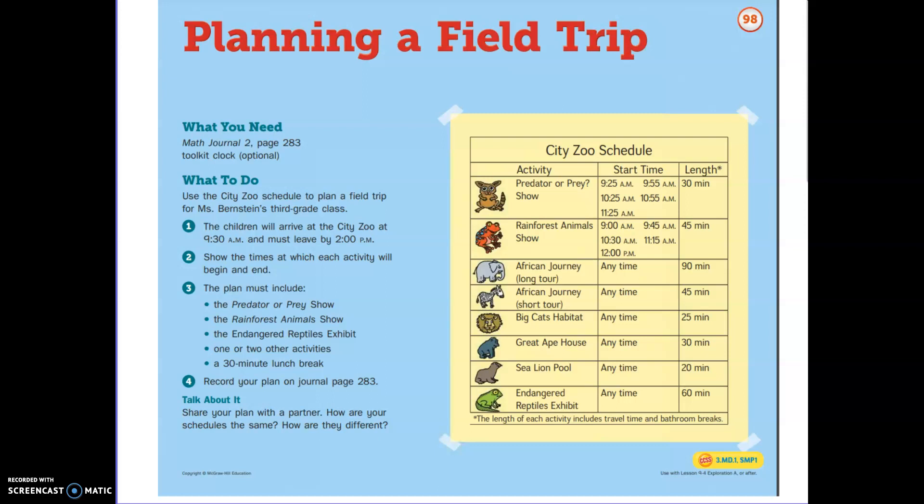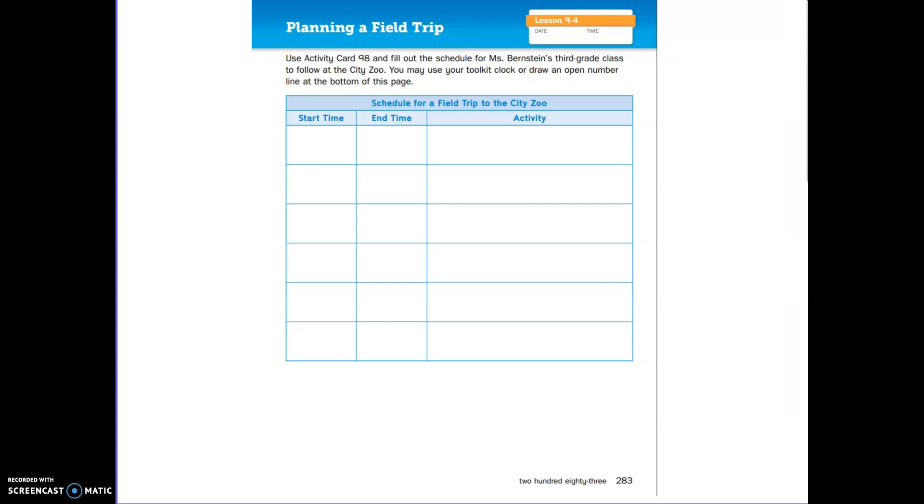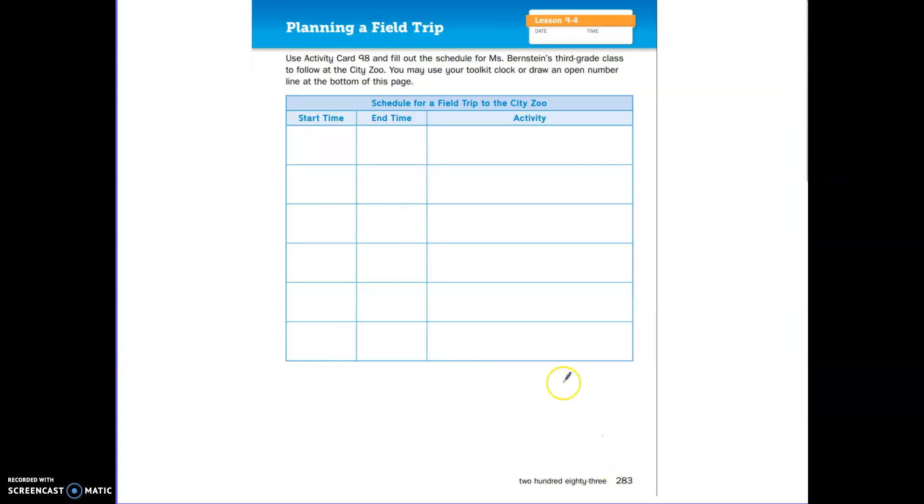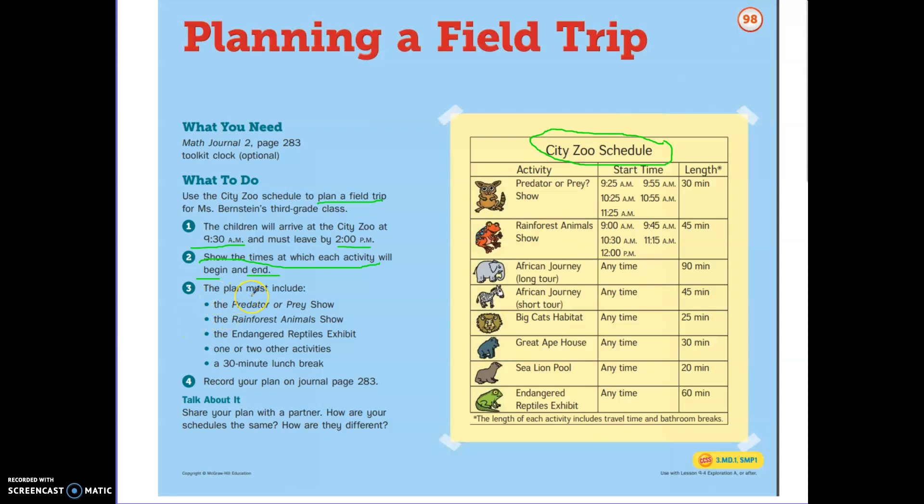Here's one of your activities for lesson 9-4. You get to plan a field trip. You're going to need your math journal page 283. You can have your toolkit if you need it. What you're going to do here is the schedule for the city zoo. The children are going to arrive at 9:30 a.m. and they have to leave by 2 p.m. So you're going to plan a field trip for the third grade class. You're going to show the times at which each activity will begin and end on page 283.